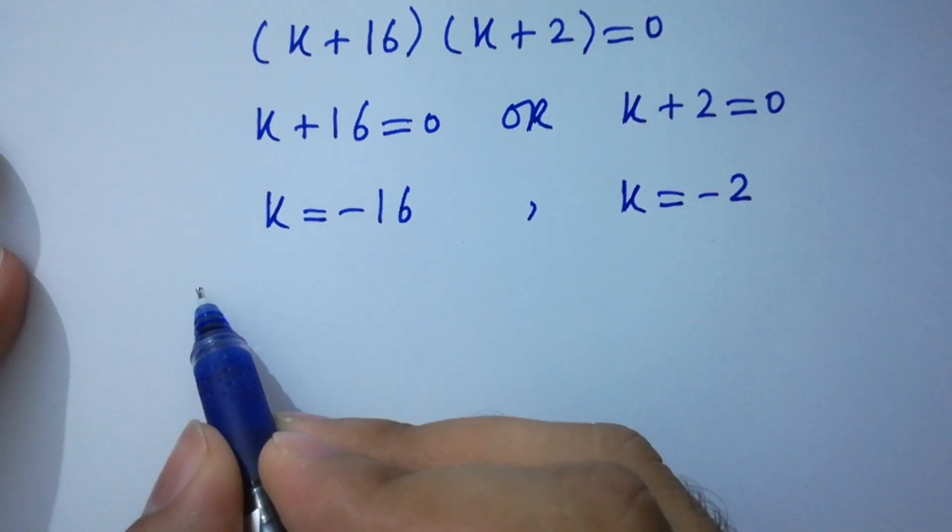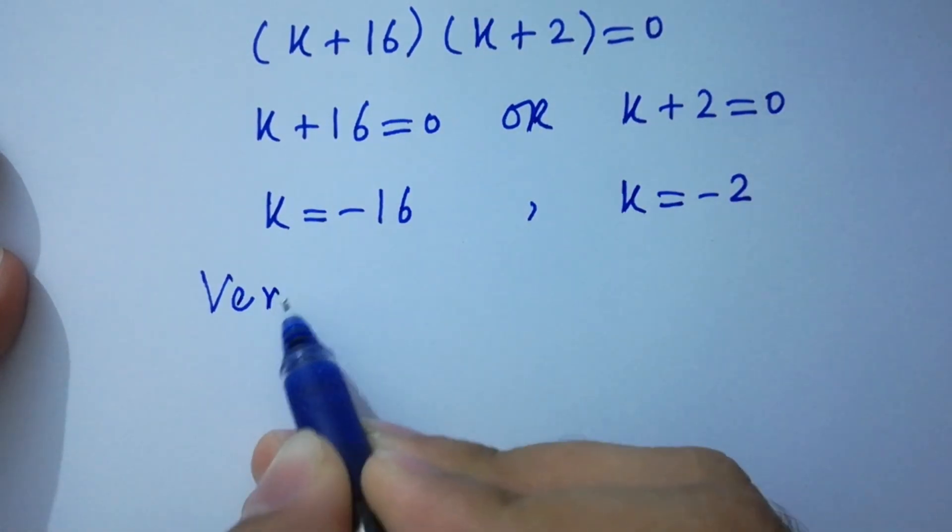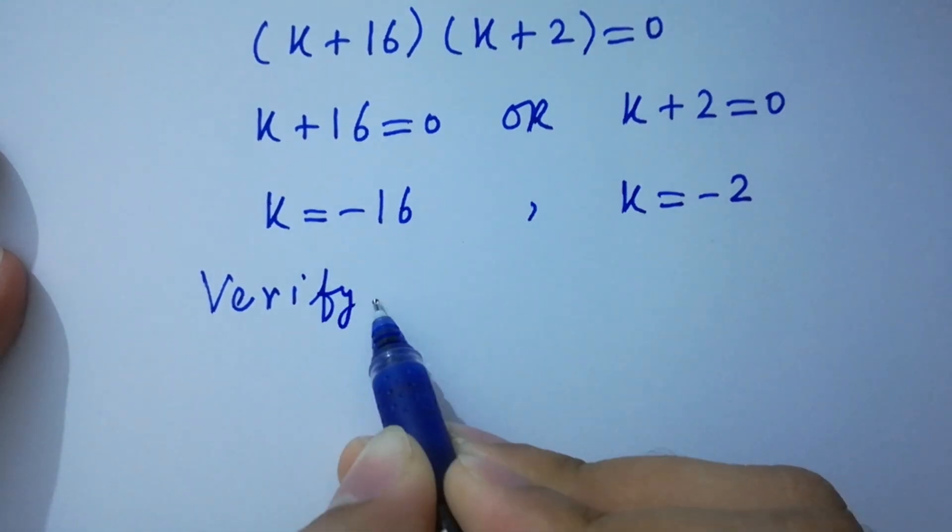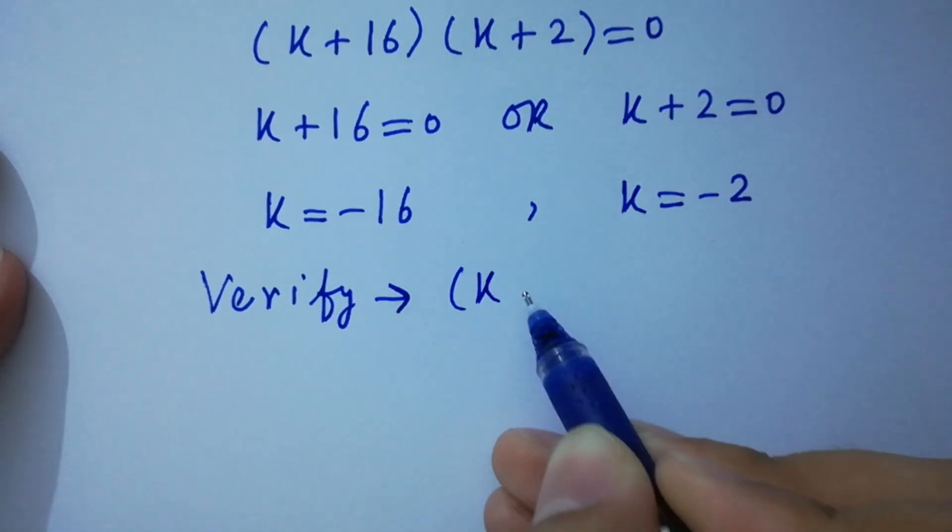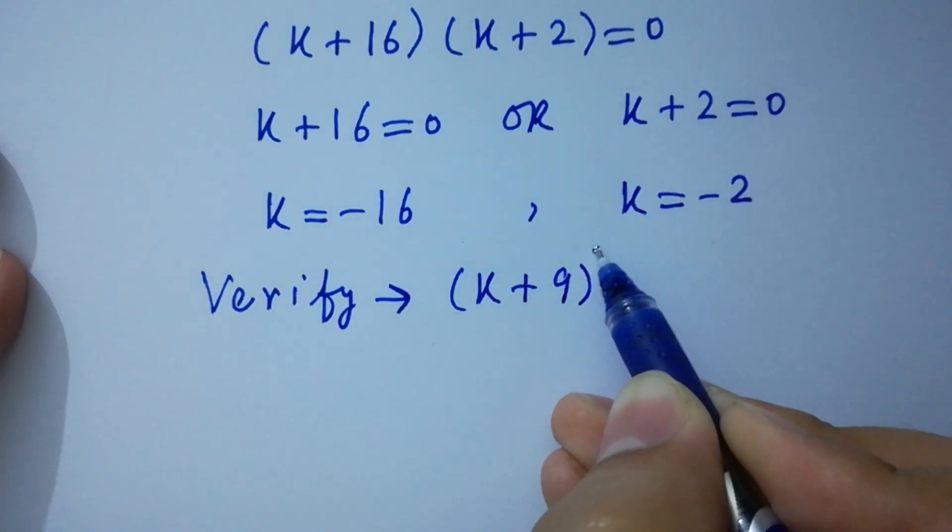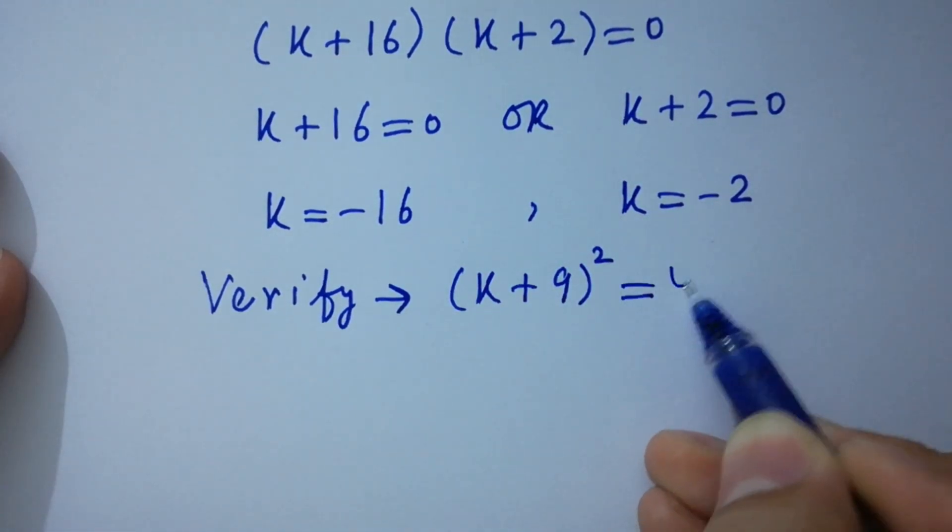In the last step, I am going to verify (k + 9)² = 49.